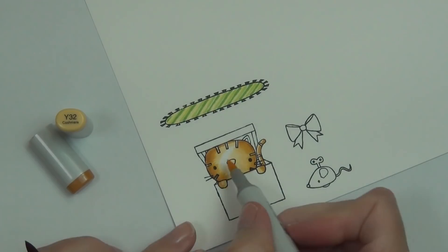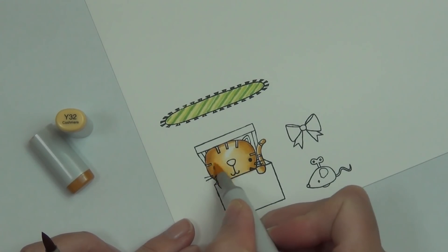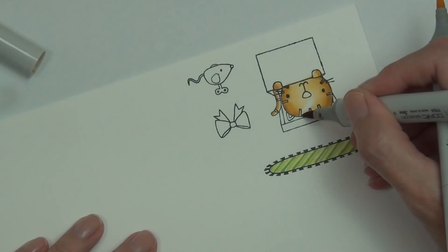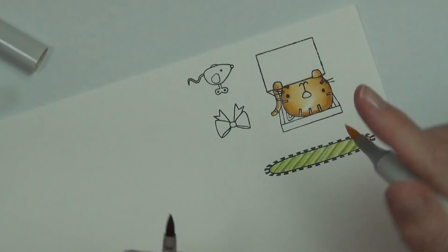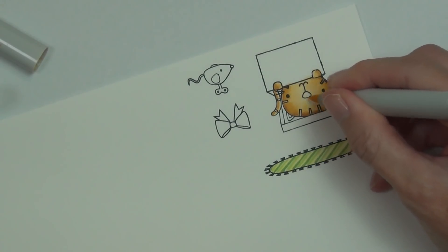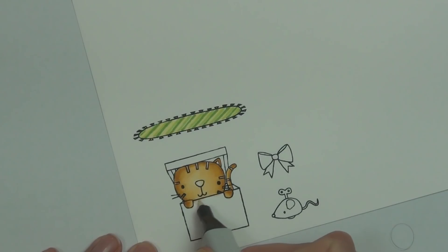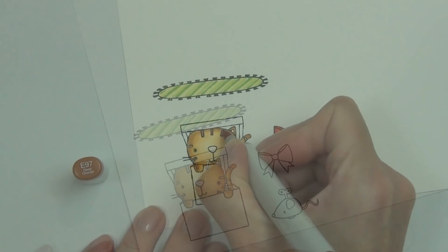This is on the Neenah 80 pound cardstock. I'm still not a hundred percent used to using Neenah with my Copics. I find that compared to the other cardstock I used to use, it does have a tendency to bleed outside the lines a little, especially when I add a lot of alcohol ink.